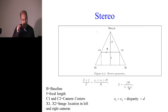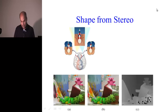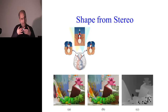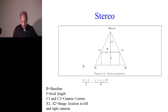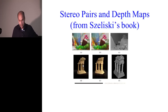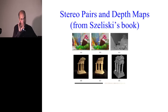Disparity is the distance between the image locations in the left and right cameras. Depending on the disparity, you can determine how far an object is. Here are some examples — we have a stereo pair, left and right images, and this is the recovered depth. Once you have the depth, you can synthesize images from different viewpoints, which is very useful in computer graphics.